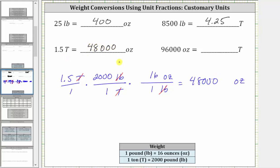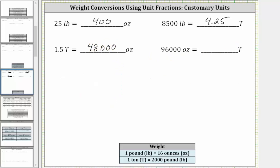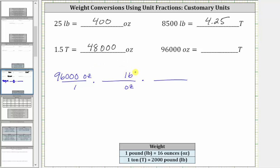For the last example, we want to convert 96,000 ounces to tons. We first write 96,000 ounces as a fraction with a denominator of one. There is no direct conversion from ounces to tons, so we have to use both conversions and therefore need two unit fractions. Let's first convert ounces to pounds. Because we want ounces to simplify out, we need ounces in the denominator and pounds in the numerator. Because one pound equals 16 ounces, the first fraction is one pound over 16 ounces. The units of ounces simplify out, leaving us with pounds.